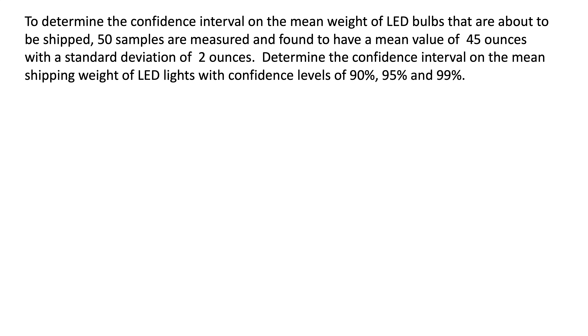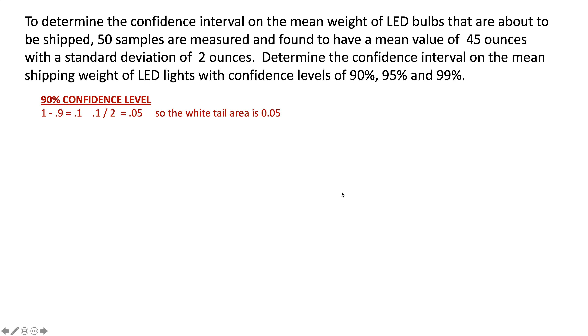I'm going to do the 90%; you're going to do the 95% and the 99%. For the 90% confidence level, we've got to figure out the white tails at the end of our diagram. That's 1 minus 0.9, which is 0.1, and then there are two tails, so divide by 2 and get 0.05. Now the calculator gets to work — second VARS, inverse norm — the area you want is 0.05, and 0 and 1 mean we're in z-score mode. That gives us 1.645.